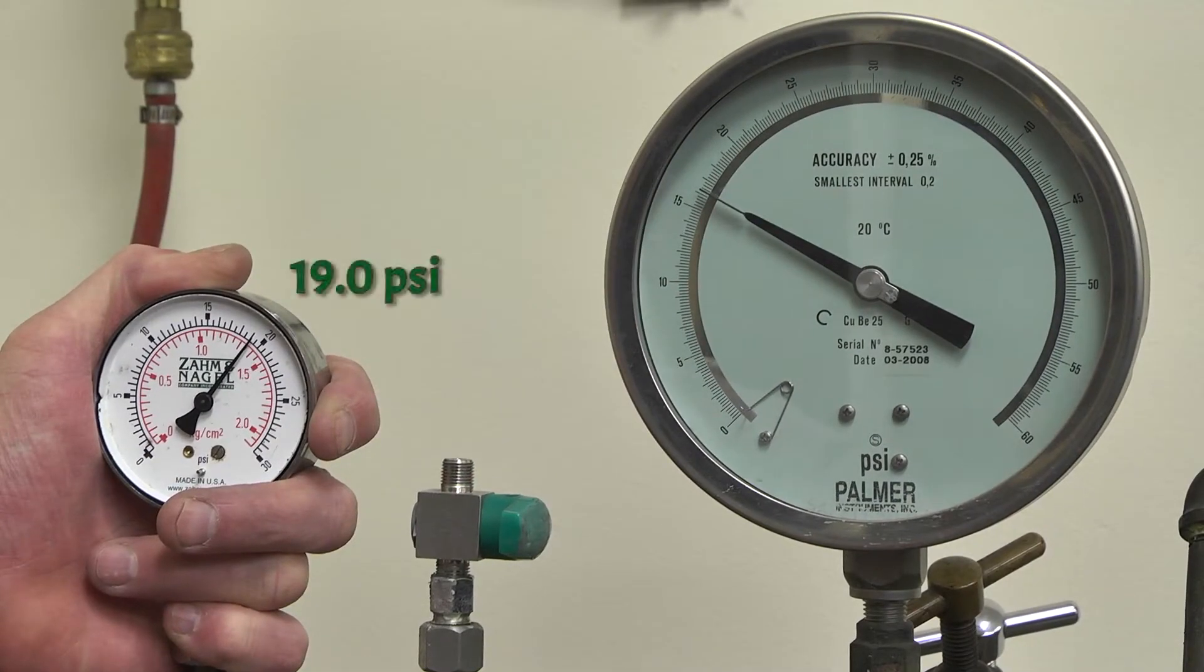Compare readings on the subject gauge to the gauge tester. If the reading varies more than one quarter of a PSI, you can adjust the subject gauge.